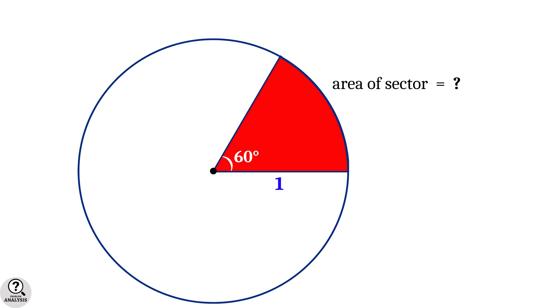Then area of the sector is equal to pi r square into x by 360 where radius r equal to 1 and angle x equal to 60. Substituting these values will give area of the sector is equal to pi by 6 square units.